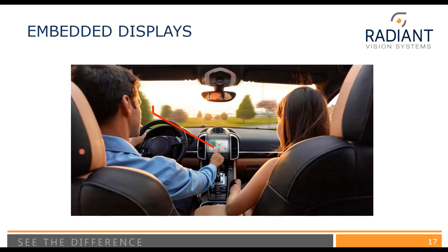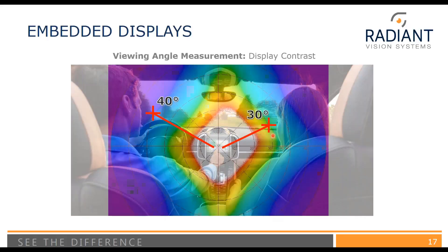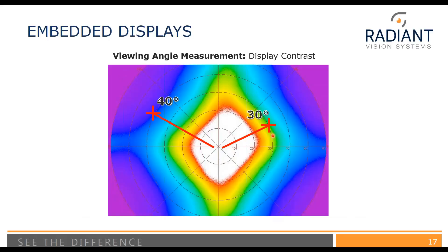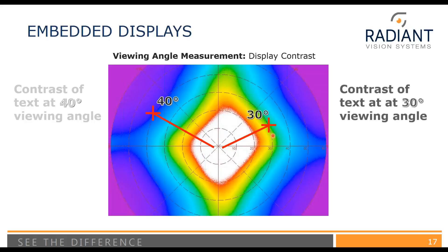In the third example, let's look at embedded displays. Imagine we have a display in the center information console of a vehicle. It's a 40-degree viewing angle to the driver and approximately a 30-degree viewing angle to the passenger in this particular example. What we would see is that the contrast of text for the driver is significantly lower compared to the contrast of text viewed from the passenger's point of view.